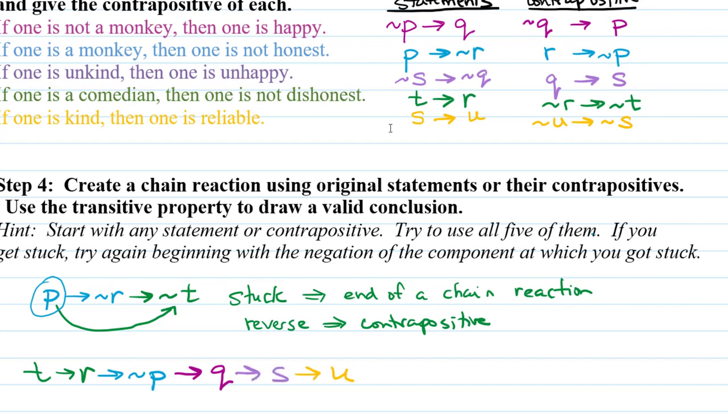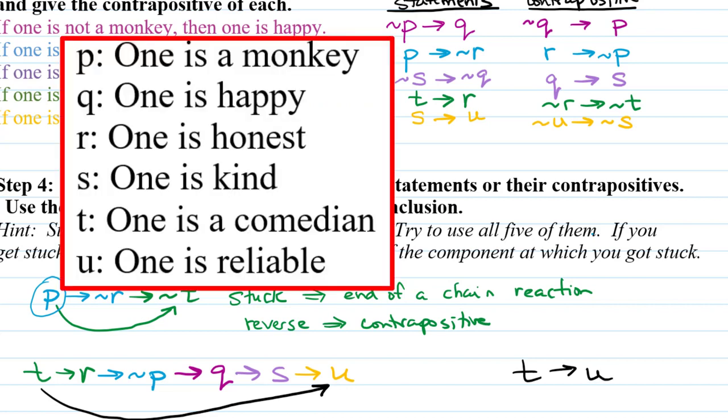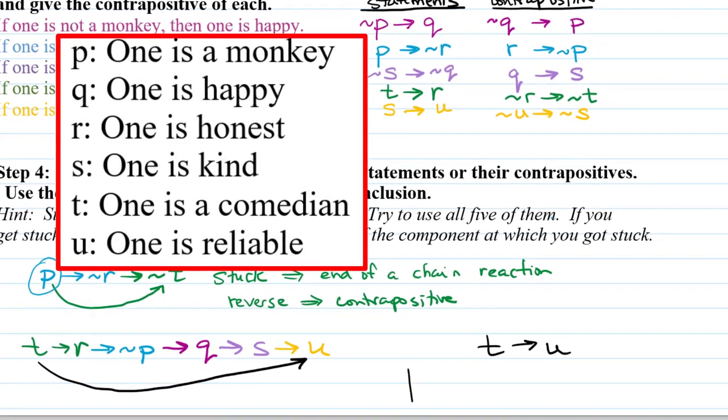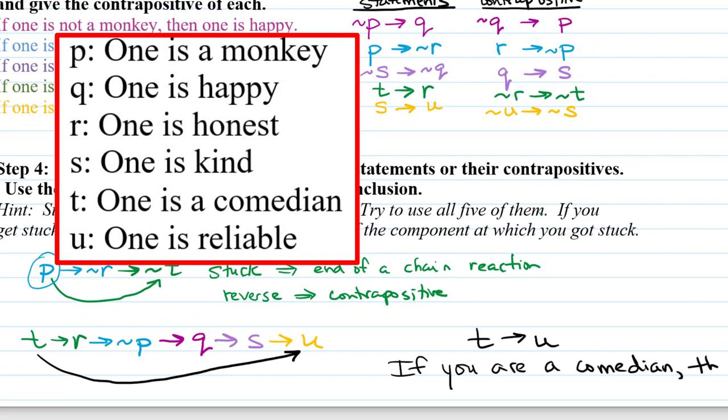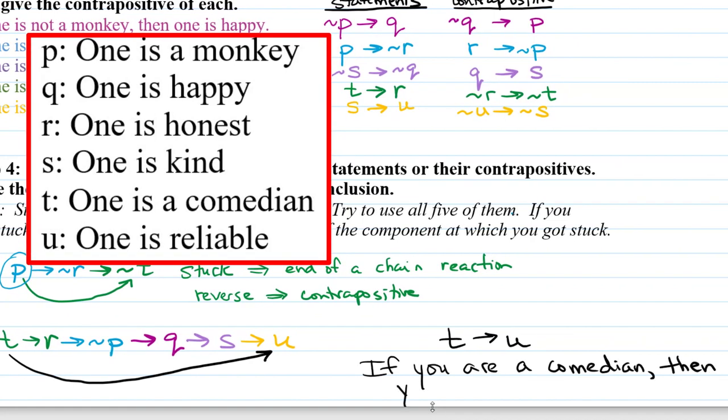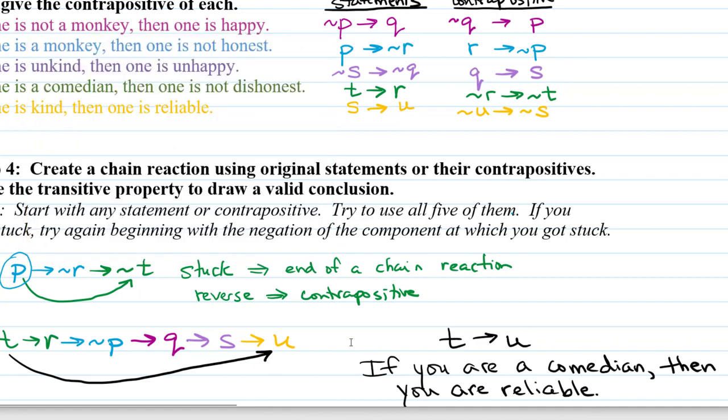And look, we have used all five of the colors, all five of the statements. Following a very long chain reaction by the transitive property, we can say that T must imply U. So since T was one as a comedian, and U was one as reliable, we could say if you are a comedian, then you are reliable. Now let's say that you didn't start with P to begin with.